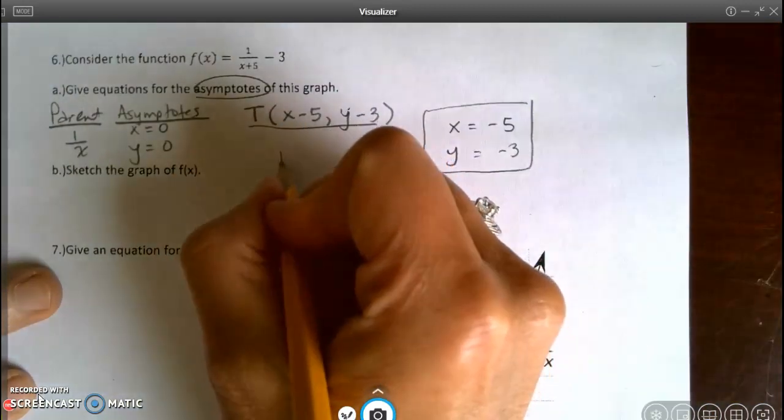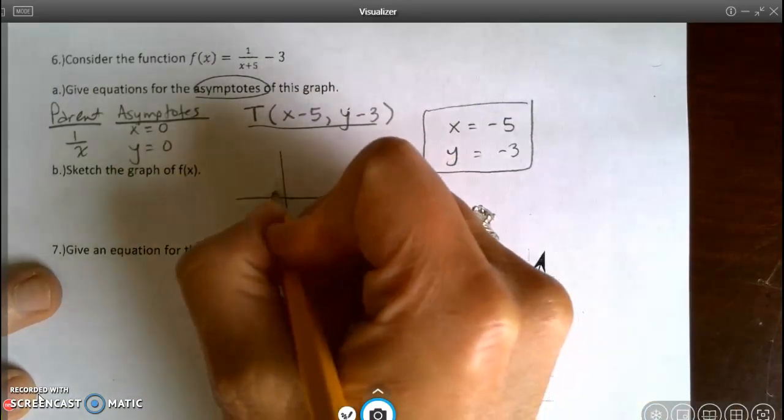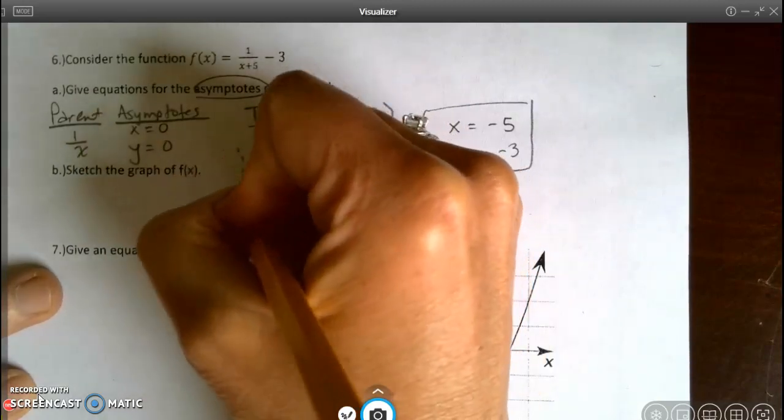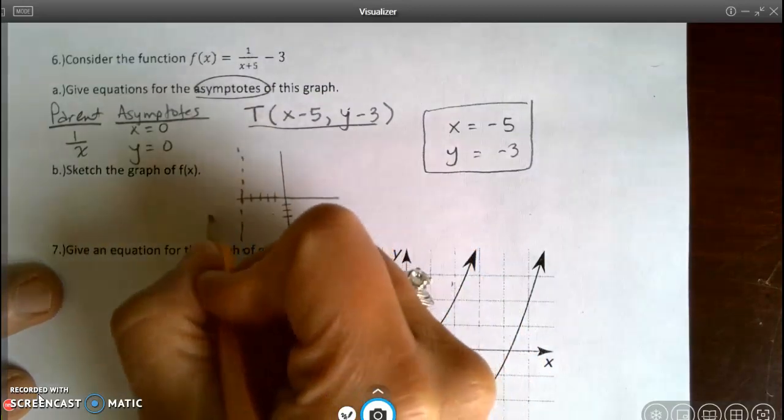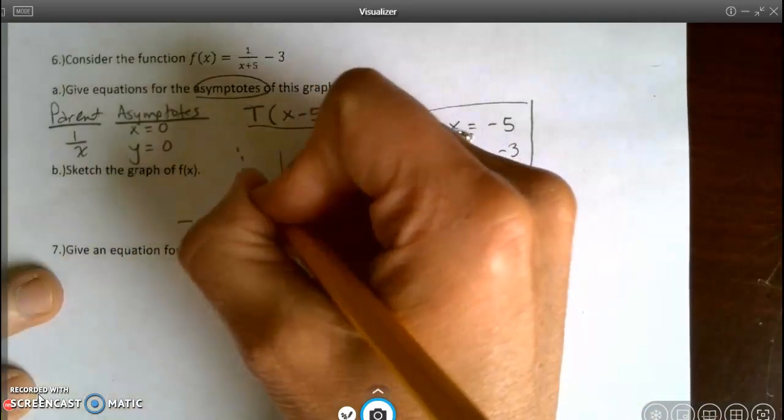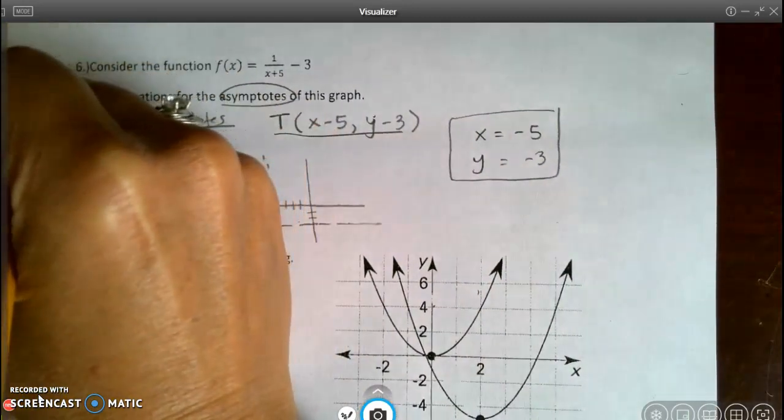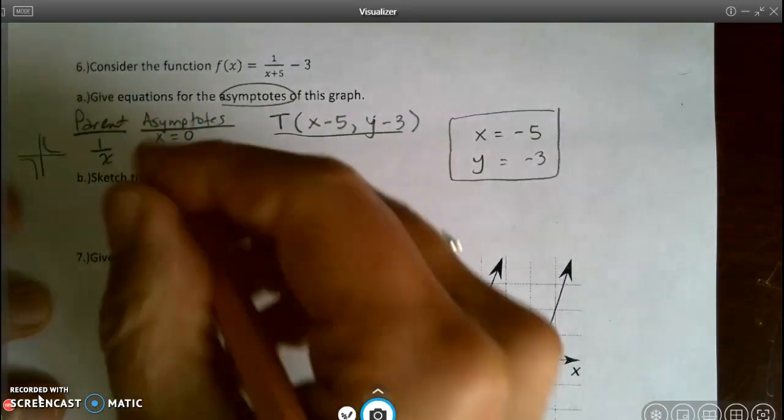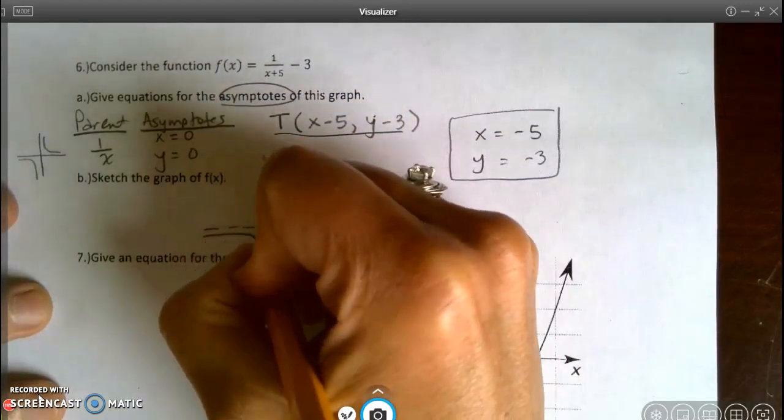Sketch the graph. I would go over to x equals negative 5, 1, 2, 3, 4, 5, and I would draw an asymptote. And I would go down to 3, 1, 2, 3, and I would draw another asymptote. And then I know that the parent function 1 over x is the graph that looks like here. So I'm going to go around my new asymptotes and sketch the same graph.